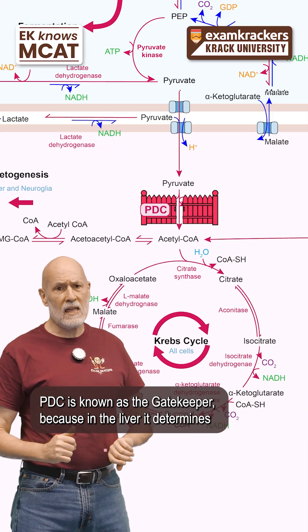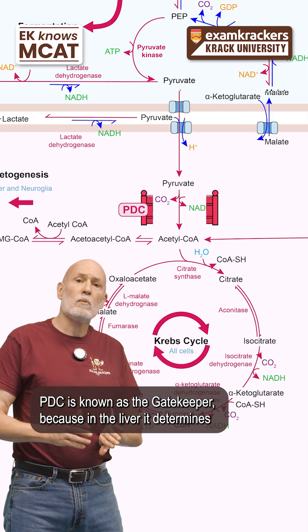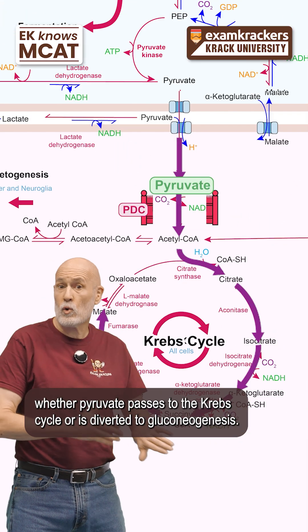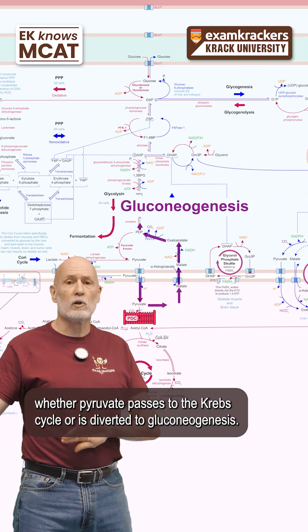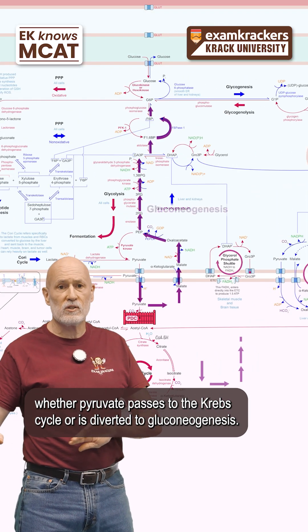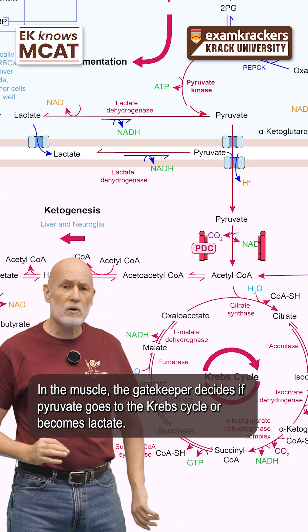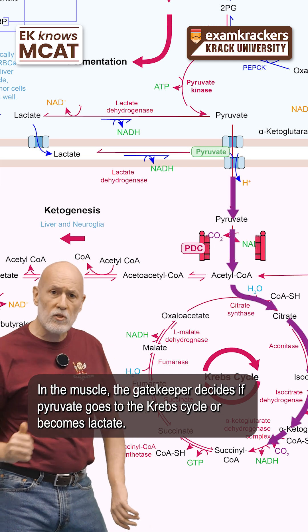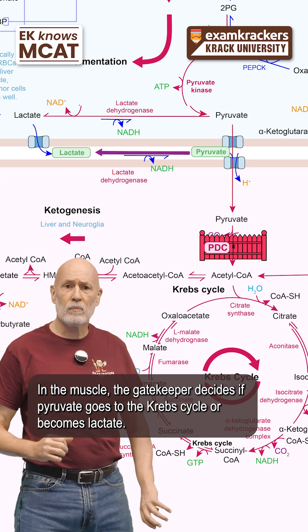PDC is known as the gatekeeper because in the liver it determines whether pyruvate passes to the Krebs cycle or is diverted to gluconeogenesis. In the muscle, the gatekeeper decides if pyruvate goes to the Krebs cycle or becomes lactate.